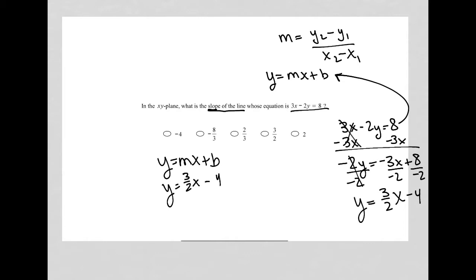I can see that the m portion here is 3 halves. That tells me that my answer is 3 halves. The slope of the line whose equation is 3x minus 2y equals 8 is 3 halves.